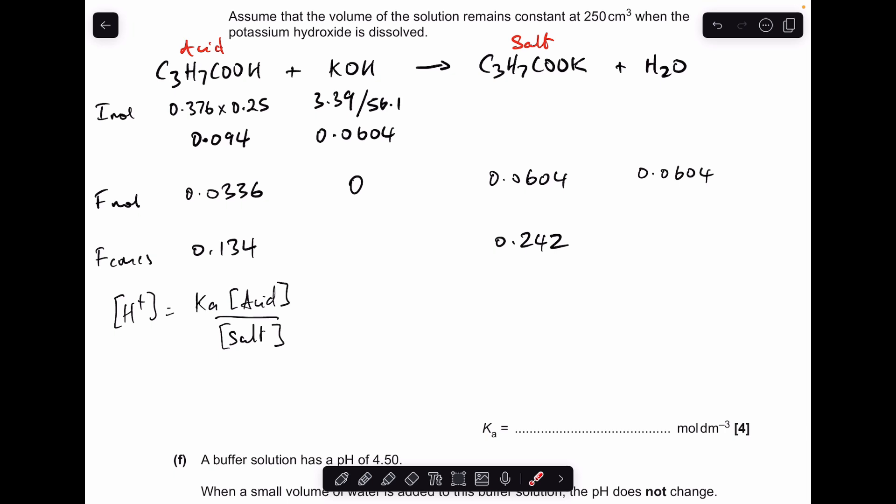Next thing I'm doing is bringing in the expression to calculate the H⁺ concentration of a buffer. I'll call this the Ka acid over salt expression, just helps me remember which way around the acid and salt go. Now they've asked us to calculate Ka so we just need to make that the subject of the equation. So we get that for Ka and now all I need to do is put my numbers in.